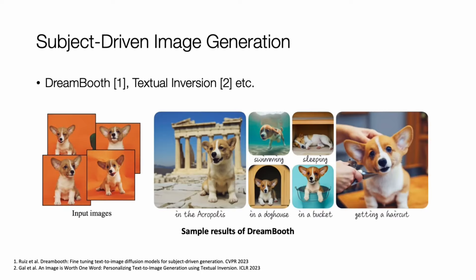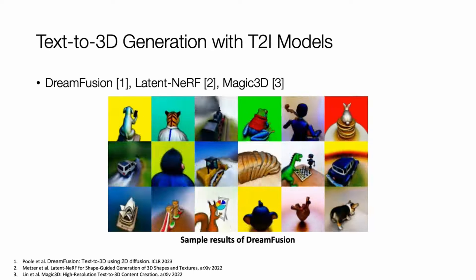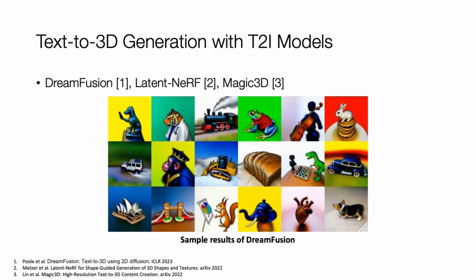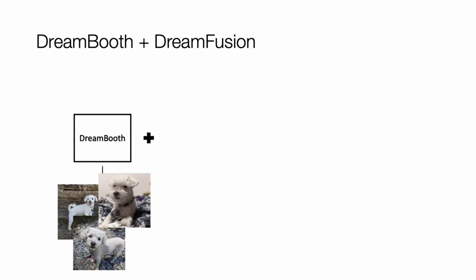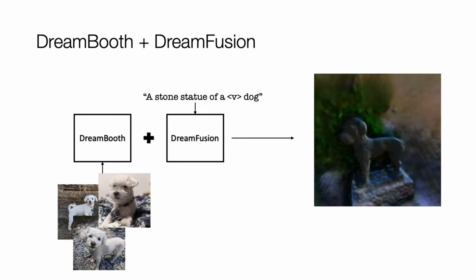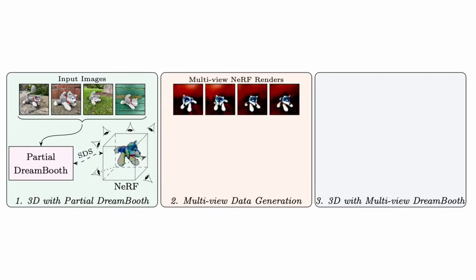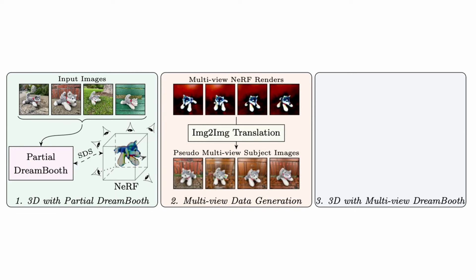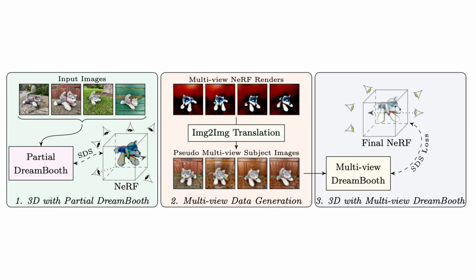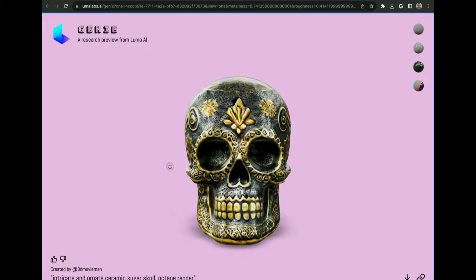Two years ago, Google released Dreambooth, an AI tool that promised to bring our wildest imaginations to life by generating 3D objects from simple text descriptions. Now, I must admit, my early attempts were, let's just say, a bit sketchy.